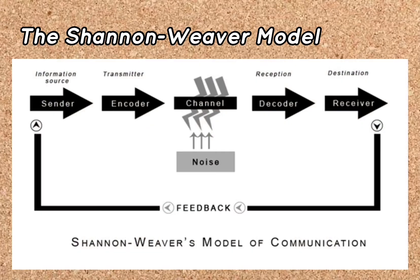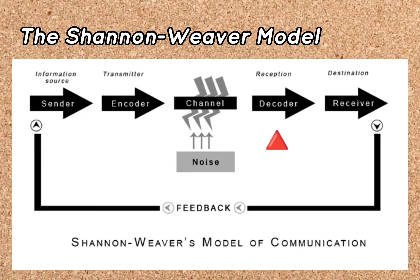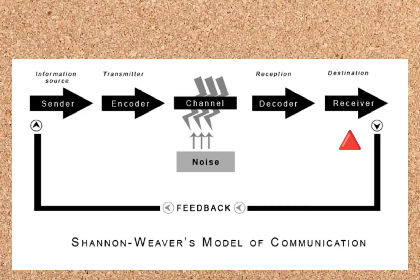The Shannon Weaver model deals with various concepts like the information source or the sender, the transmitter or the encoder, the channel in which noise is present, the reception or the decoder, and lastly the destination or the receiver. Now, let us show you a scenario depicting the Shannon Weaver model of communication.